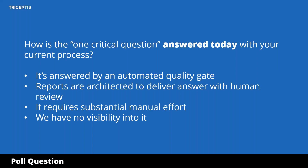One of the more primary goals we should look at in software testing is what we don't have to test — being more focused on that in order to be more effective. So let me ask one more poll question. Given that I posed the question 'does the release have an acceptable level of risk?' and showed how to achieve it through advanced design and risk weighting: how is the one critical question answered today with your current process? Is it answered by an automated quality gate? Are reports architected to give you these answers but require human review? Does it require substantial manual effort? Or do you have really no visibility into it?